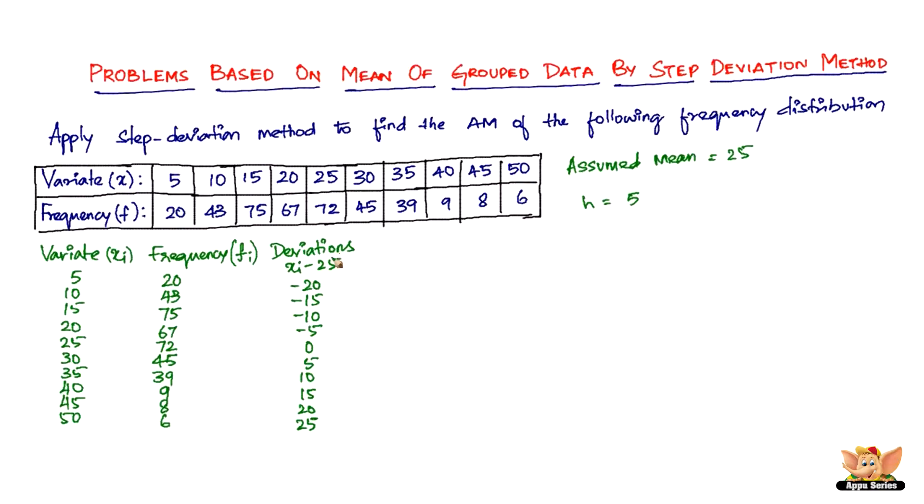Then we've got this new term which is U_I, which is nothing but D_I divided by H. So minus 20 will get divided by 5 - everything gets divided by 5 because it's going to make the calculations much simpler. This is going to be minus 4, minus 3, minus 2, minus 1, 0, and 1, 2, 3, 4, and 5.